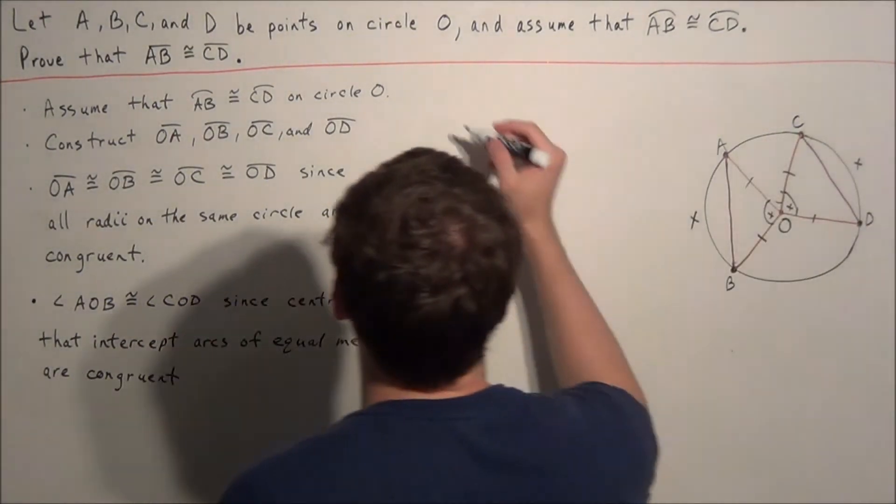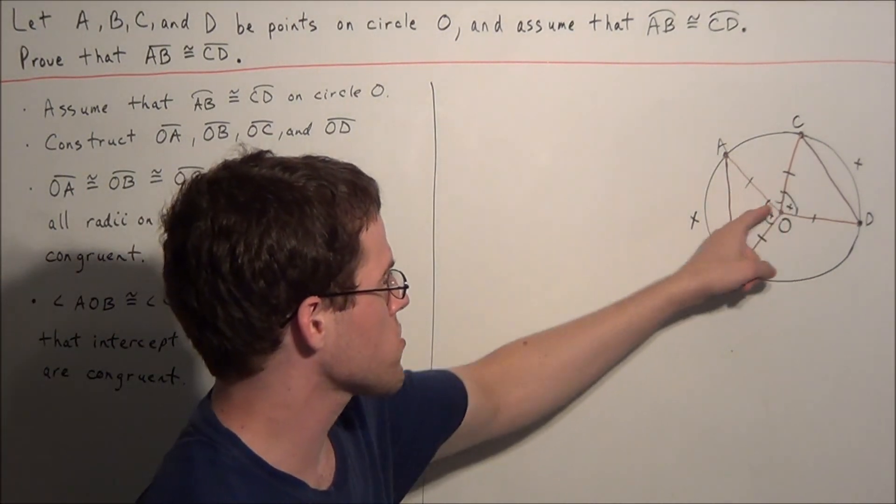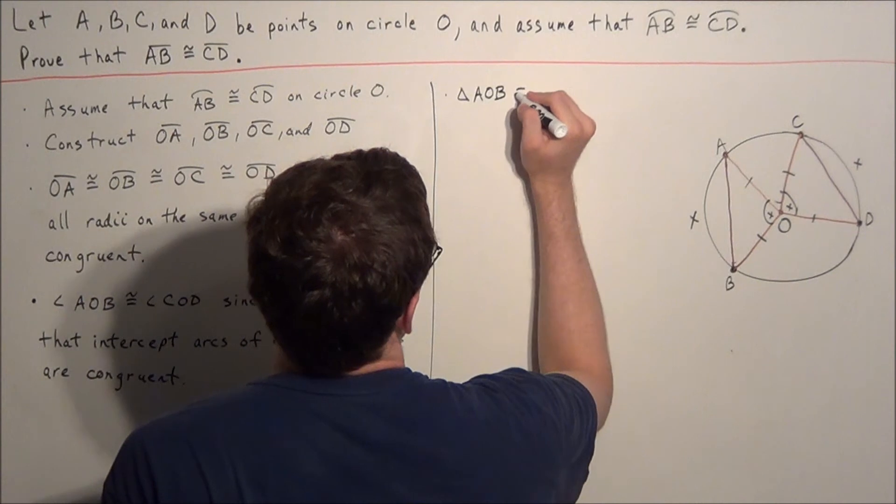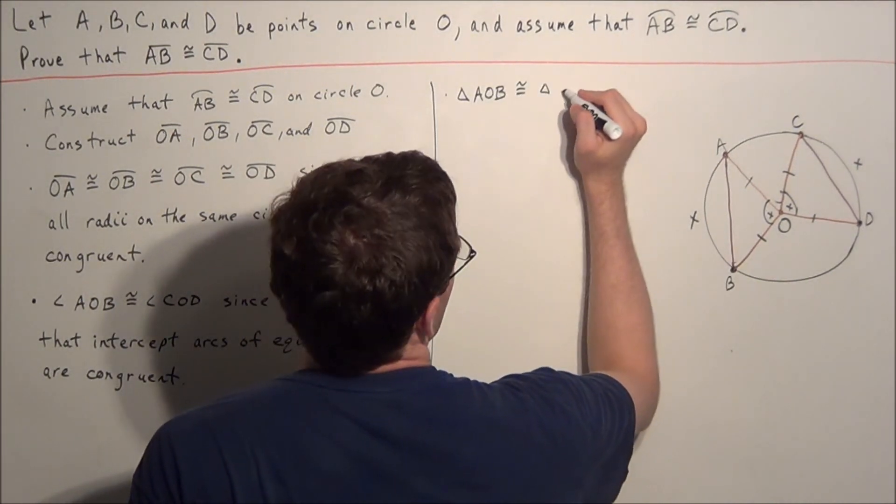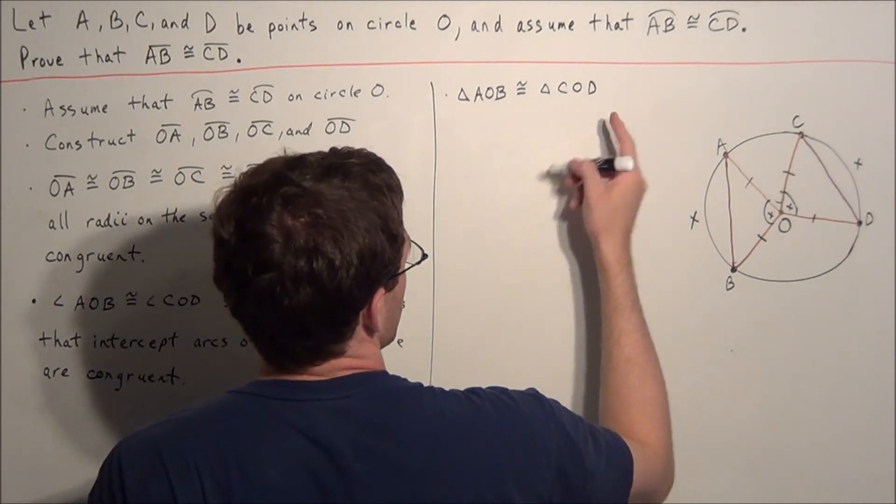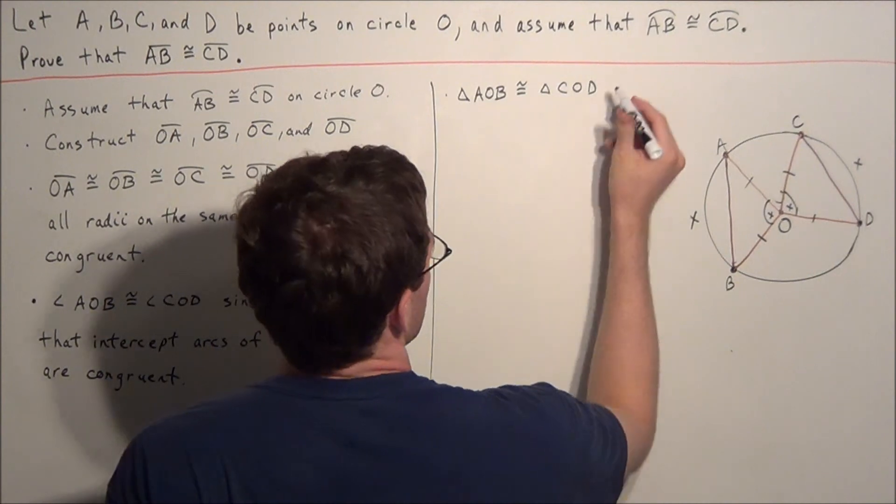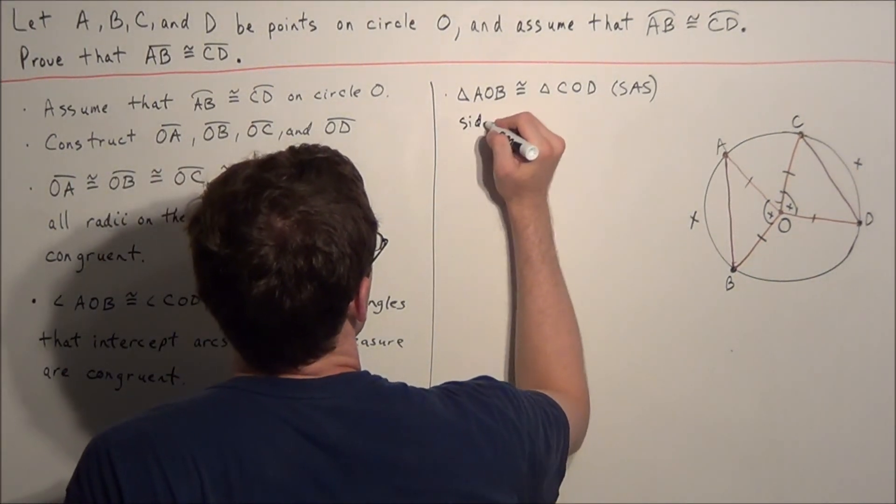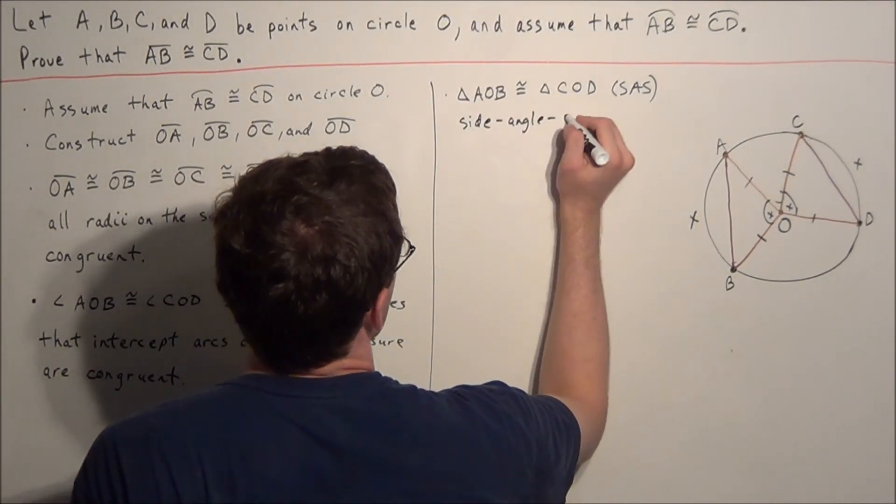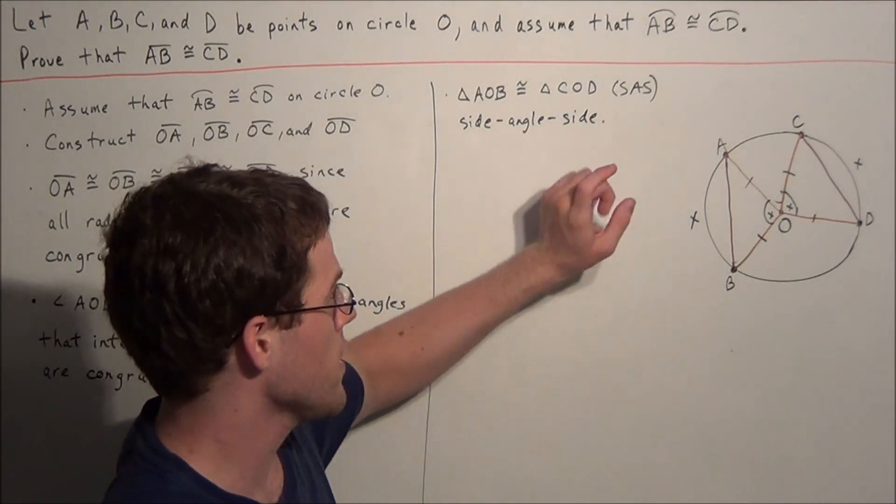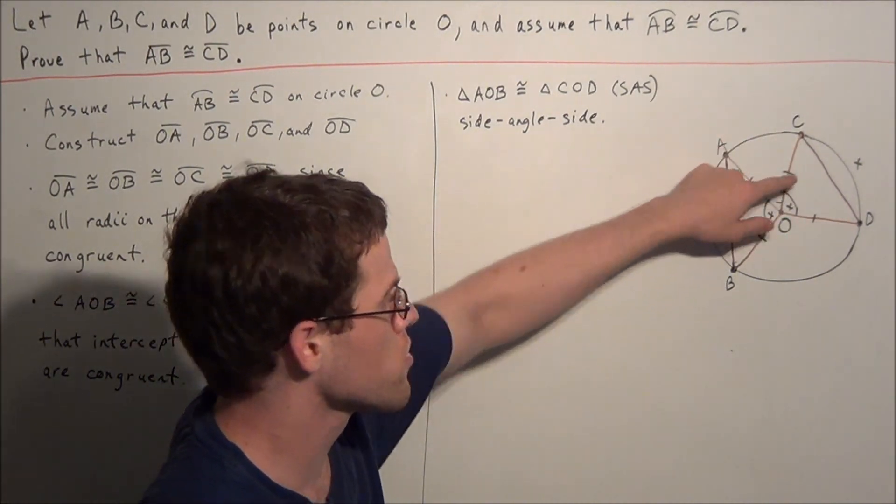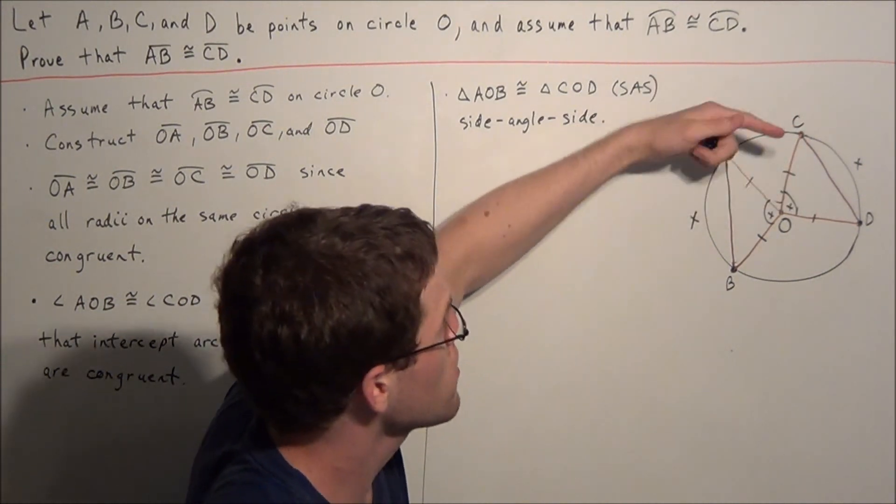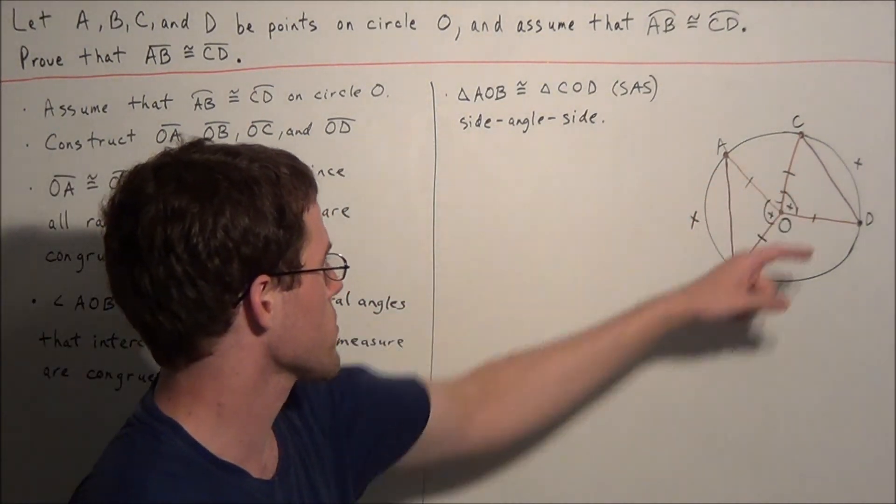But now what do we have? Now for the next line, what we could say is now we know that these two triangles are congruent. So we could say triangle AOB is congruent to triangle COD. And the reasoning behind this, we could say, well we could just initial this, we could say by side angle side. This stands for side angle side. And this is a condition for triangle congruency. If two triangles have the same consecutive side angle side combination, then those two triangles are congruent. So notice how these two triangles here, they share a pair of congruent sides, followed by a congruent angle, followed by another pair of congruent sides. So therefore these two triangles are congruent.